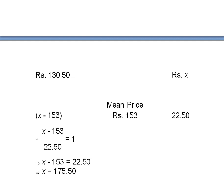If you have seen part first, you know that what was the rule of allegation. The price of dearer and cheaper were formed in our diagram like that. So mean price is in the middle, and this side is CP of cheaper and this is CP of dearer.